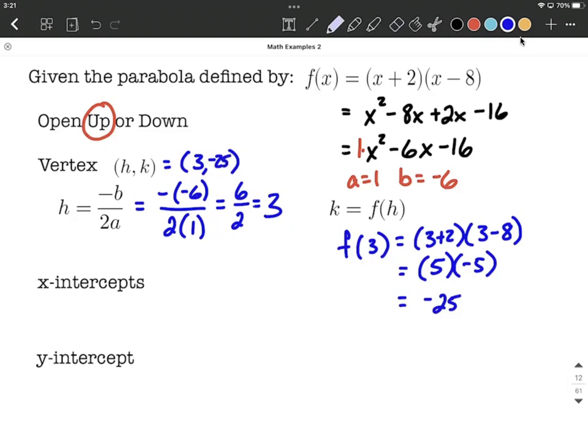Now to determine where the x-intercepts are, x-intercepts are always whenever the y value or f of x value equals 0. So I'm going to substitute 0 in for f of x. I'm using the factored version at the beginning. So we can say 0 equals x plus 2 times x minus 8.